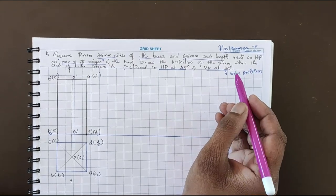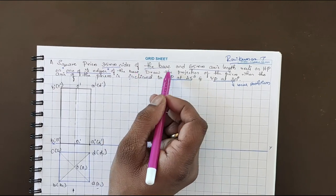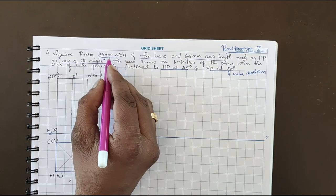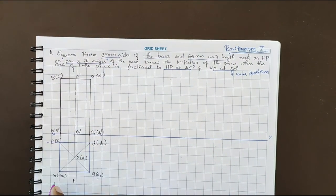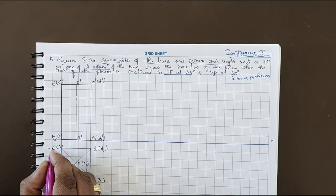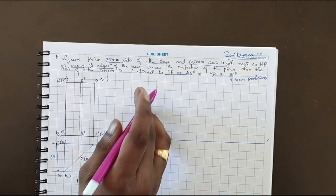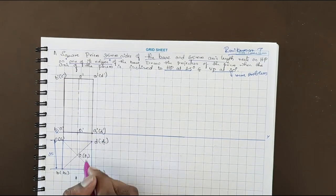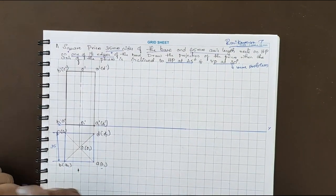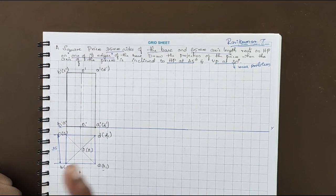My name is Ravik Mar. The first problem on solids is a square prism — 35mm sides of base and 65mm axis length — resting on HP with one of its sides facing you. I have already constructed the 35mm square base. They clearly mention one of its edges towards your right-hand side, so do the naming: a, a1, b, b1, c, c1, d, d1.